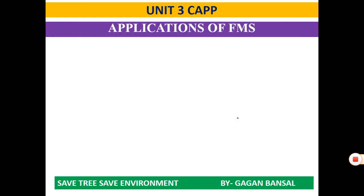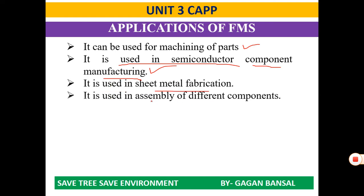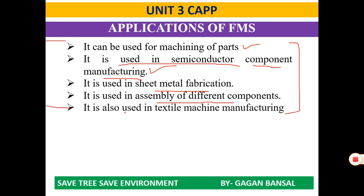Now let us see applications of Flexible Manufacturing System. FMS is used for machining of parts, semiconductor component manufacturing, sheet metal fabrication, assembly of different components, and textile machine manufacturing. In fact, applications of FMS extend across all kinds of manufacturing industries.